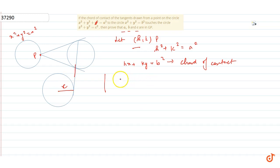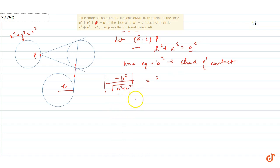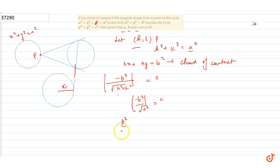Perpendicular distance formula se: |−b²| / √(h²+k²) = c. Since h²+k²=a², this becomes b²/a = c. A, b, c are positive as they are lengths of radii, so ye aa jae ga: b²/a = c, i.e., b² = ac.